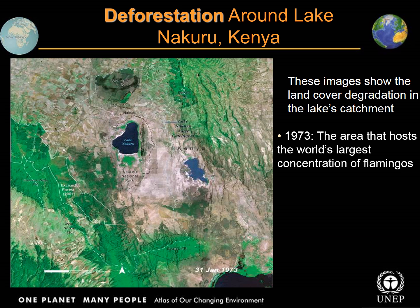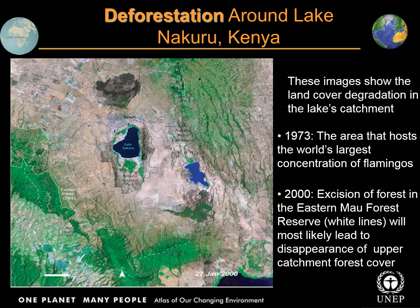Let's turn to Kenya, around an area called Lake Nakuru — by the way, a site of some of the largest concentrations of flamingos in the world. Looking at the colors, there's lots of green in 1973, with some gray and brown. Now let's take a look at 2000: look at all the green that is no longer there — all this brown and gray. More examples of deforestation.